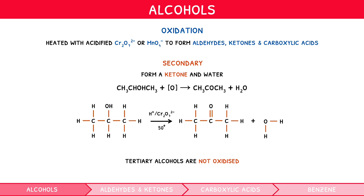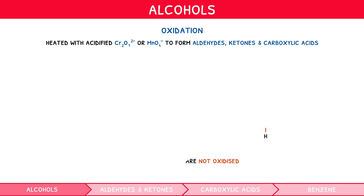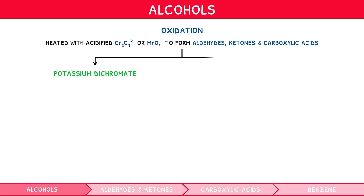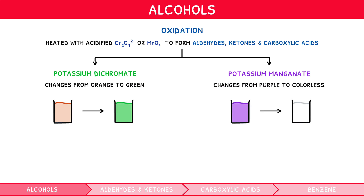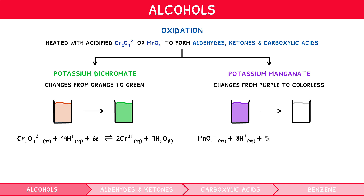It is important to note that during these oxidation reactions, the reduction of acidified potassium dichromate and acidified potassium manganate causes a colour change in both species. The first changes from orange to green, and the second from purple to colourless, expressed via the following two half-equations: Cr2O7²⁻ + 14H⁺ + 6e⁻ → 2Cr³⁺ + 7H2O, and MnO4⁻ + 8H⁺ + 5e⁻ → Mn²⁺ + 4H2O.